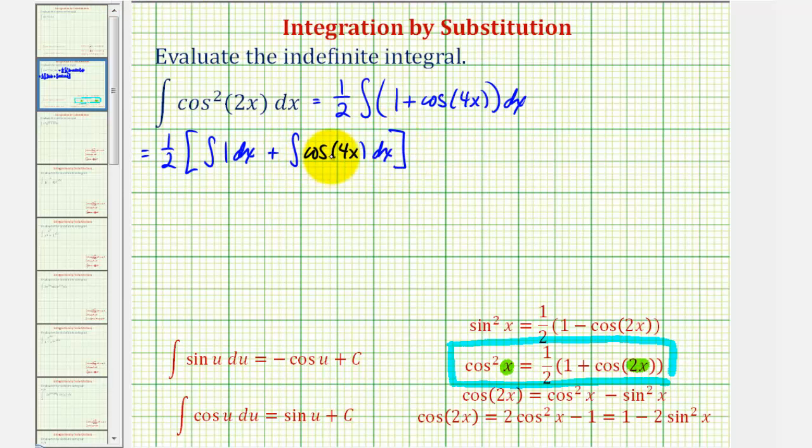And again, this is going to require u substitution, where u would be equal to 4x. And therefore, differential u would be equal to 4 dx. So if we divide both sides by four, notice that one-fourth du is equal to dx.